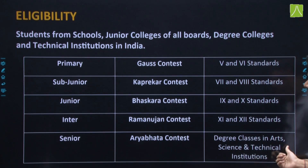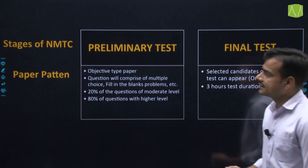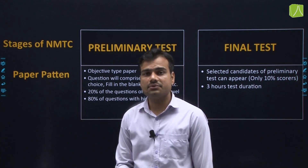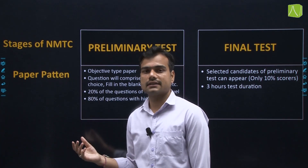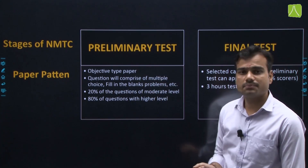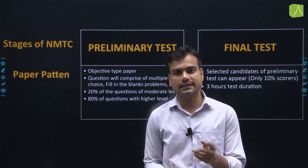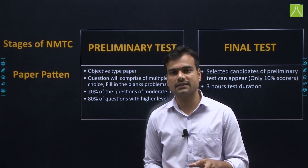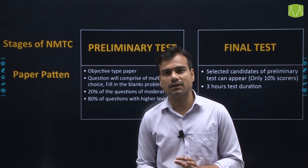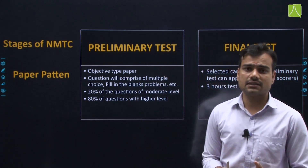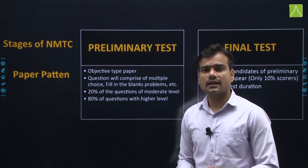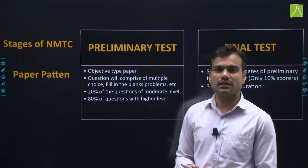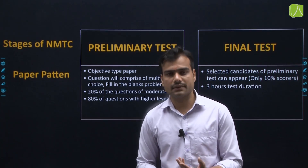Now let's talk about the NMTC exam stages and paper pattern. The NMTC exam is conducted in two stages: the Preliminary Test and the Final Test. The Preliminary Test will be objective type — it includes multiple choice questions, fill in the blank, and other types of questions.